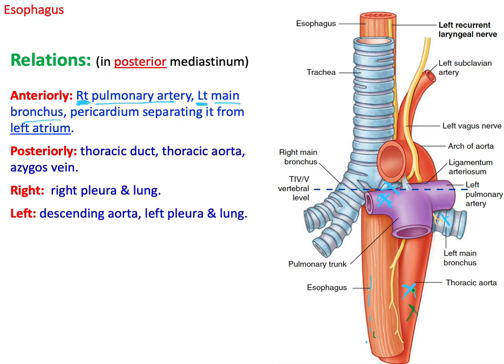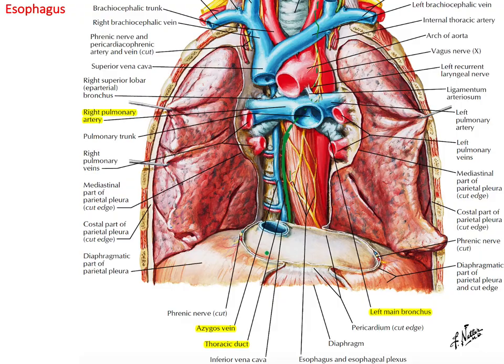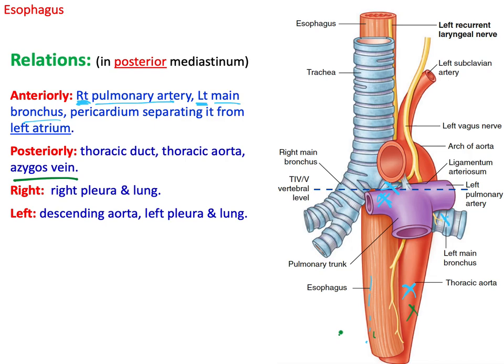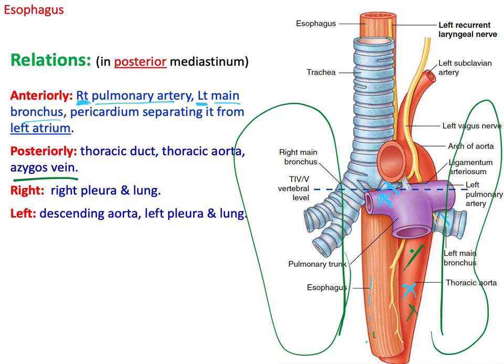The azygos vein is located to the right. To the right you have the right lung and pleura; to the left you have the left lung, pleura, and the thoracic — or descending — aorta. The thoracic aorta and descending aorta are the same structure.